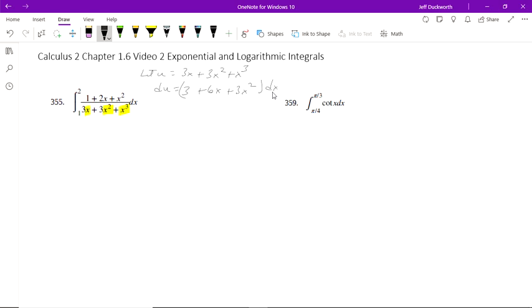Which is not what we have in the numerator. However, if we divide and pull out a 3, factor out of 3, du over 3 is equal to 1 plus 2x plus x squared dx, and that's exactly what we have over there on the top part of the integral.